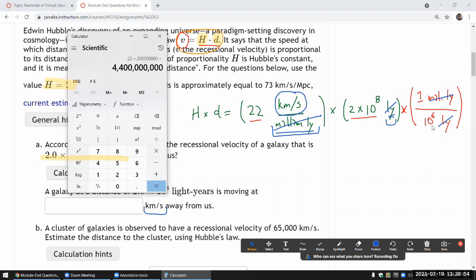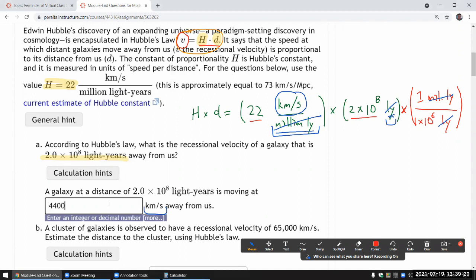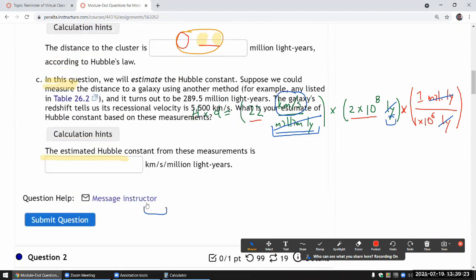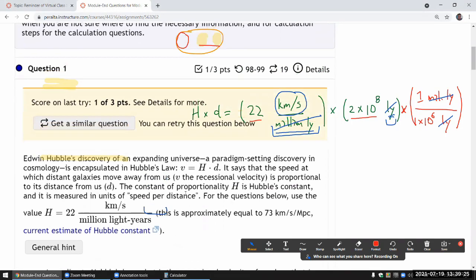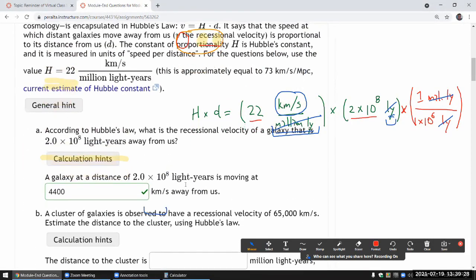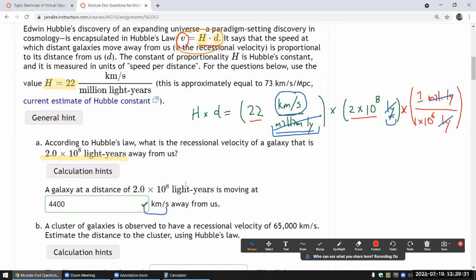Or more precisely, what that is, is 1 times 10 to the power of 6. So on my calculator, I have to enter it as 1 times 10 to the power of 6. So, okay, 4,400. 4.4 thousand kilometers per second. I don't know if that sounds right, but that's the number I got. So I'll enter that and see if it says it's right. Okay, good. So we got that part. Let's move on.